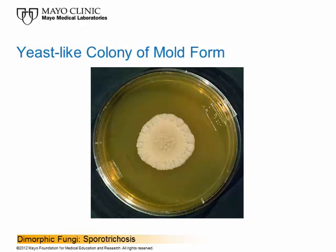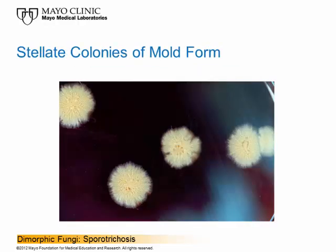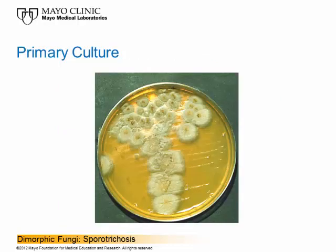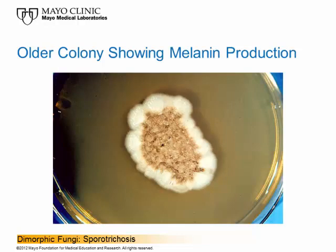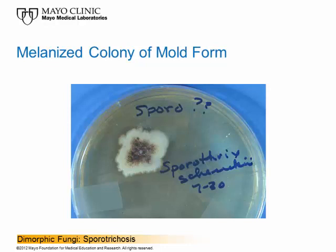Here is an example of stellate or star-like colonies of Sporothrix schenckii. All these colonies look different but they are all cultures of Sporothrix schenckii. Here you can see a primary isolate from a patient where the center of the colony is darker than the perimeter. In time, the culture begins to form melanin in the center, and as the culture matures, the rest of the colony turns dark. A colony showing melanin production is common for this organism — the spores turn dark, producing a heavily melanized appearance.